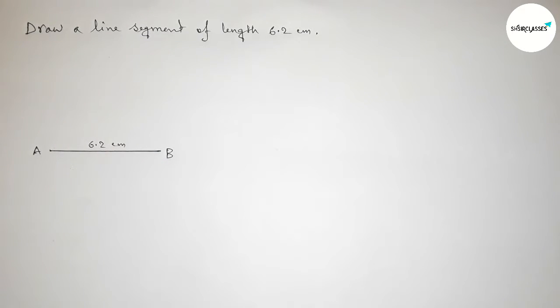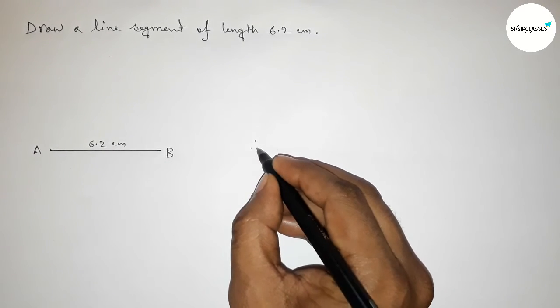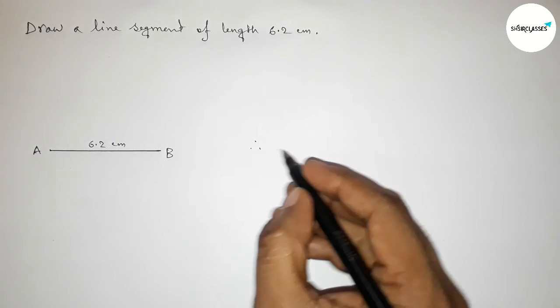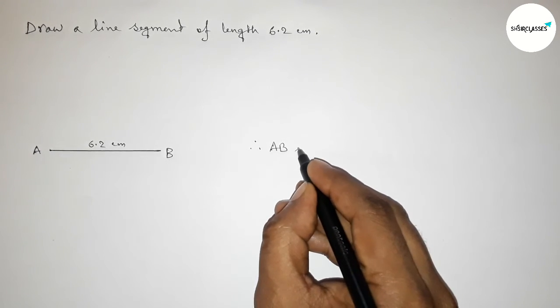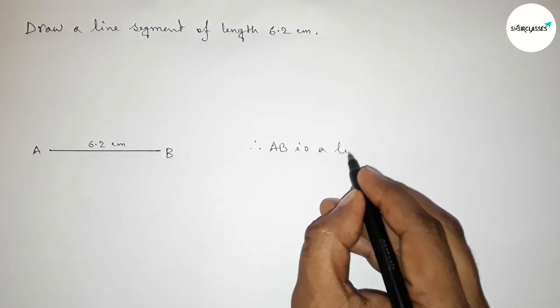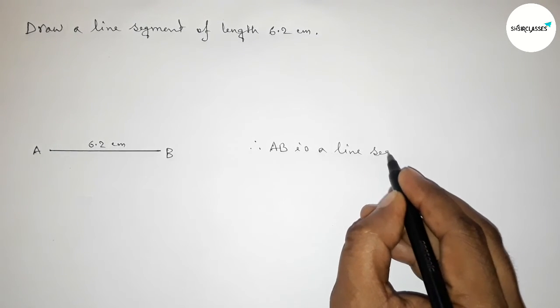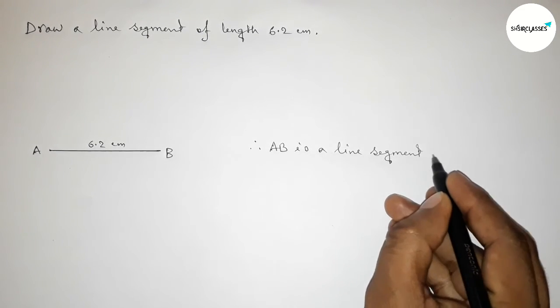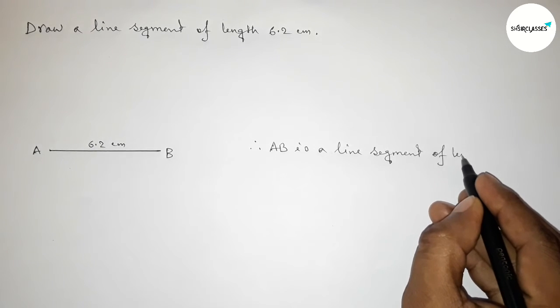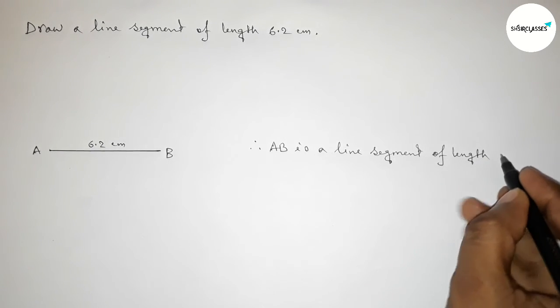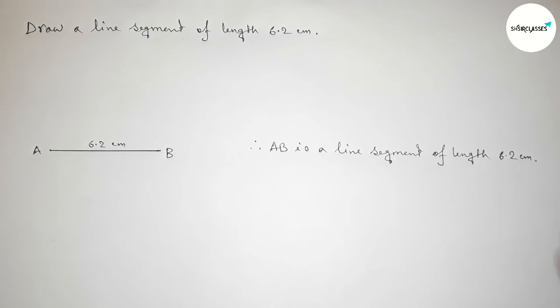So now, therefore, we can say that AB is a line segment of length 6.2 centimeters, and you can draw a line segment with the help of a scale by this way.